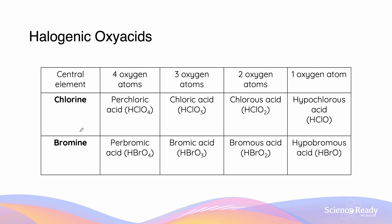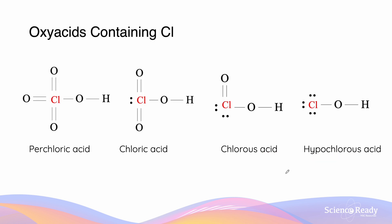Here we have an example of halogenic acids containing chlorine and bromine. For the formula HXO4 where X is Cl, we call this perchloric acid. One less oxygen we call it chloric acid, one less than that we call it chlorous acid, and then we call it hypochlorous acid. Similarly, for bromine, the most oxygen is perbromic acid, followed by bromic acid, bromous acid, and then hypobromous acid. Here are the structures of our oxy acids containing chlorine: perchloric acid, chloric acid, chlorous acid, and hypochlorous acid.